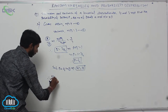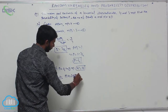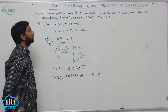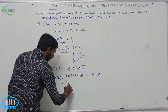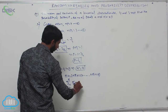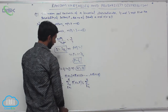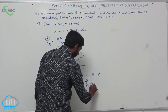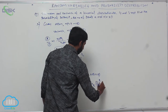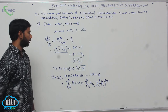Next, P(X greater than or equal to 1) equals P(X=1) plus P(X=2) plus and so on up to P(X=16). This can be written as sigma over K equals 1 to 16 of P(X=K), which equals the sum of 16CK times (1/4)^K times (3/4)^(16-K), where K equals 1, 2, 3, and so on up to 16.